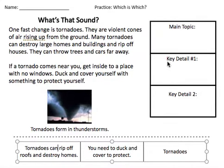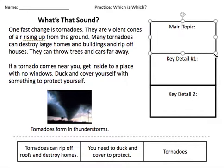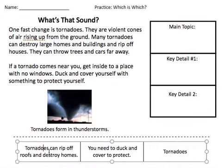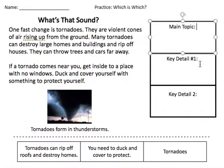Now, we're going to read these. One of these is the main topic — what the text is all about. Two of these are key details — facts that tell us more about the main topic. You're going to cut these out and decide which one's which. The first one: tornadoes can rip off roofs and destroy homes. Is that a main topic or one of the key details?